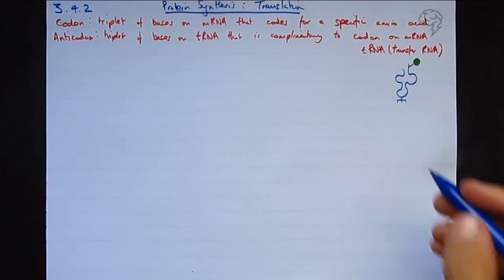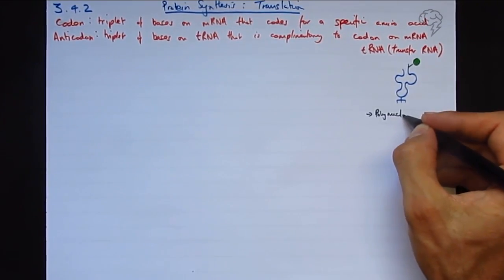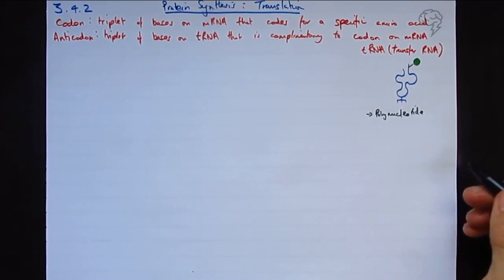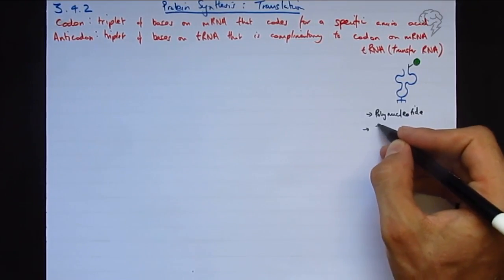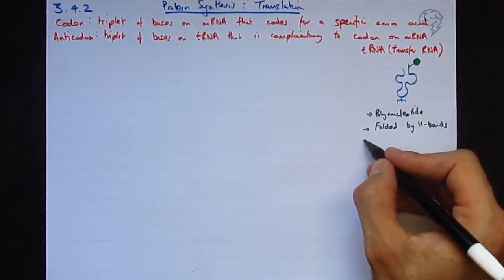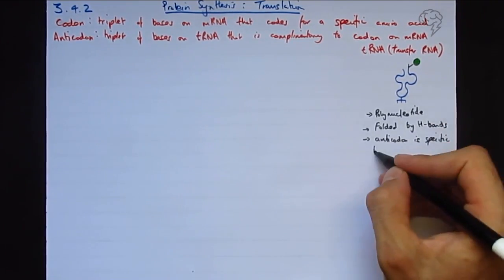So what do we need to say in terms of notes? It's a polynucleotide, and it's RNA so it's going to have U's and not T's. It's folded by hydrogen bonds, and most importantly, the anticodon is specific to the amino acid that it carries.